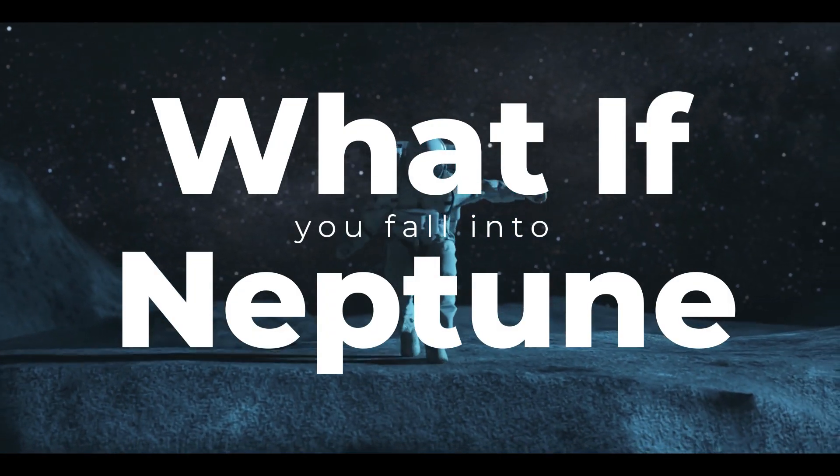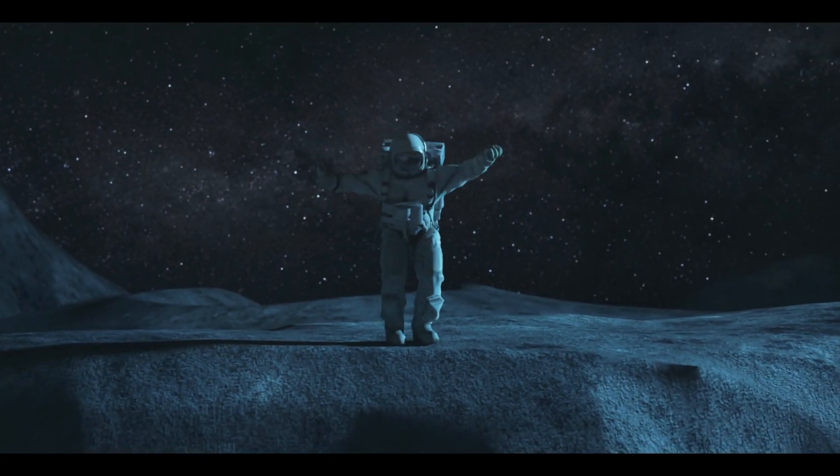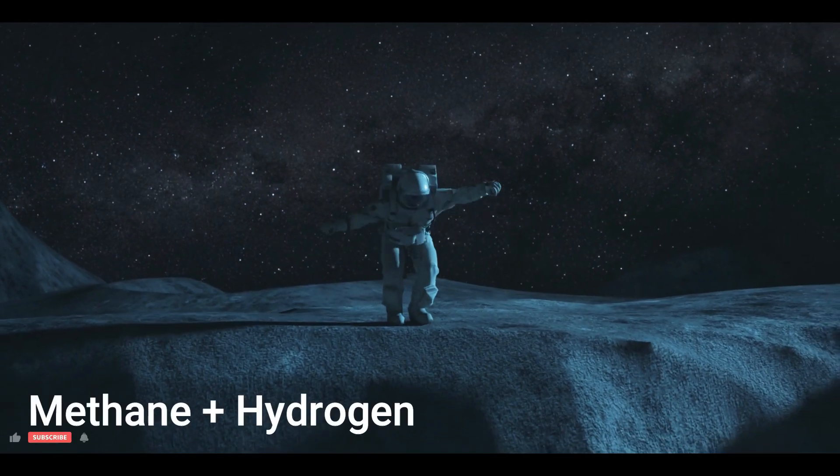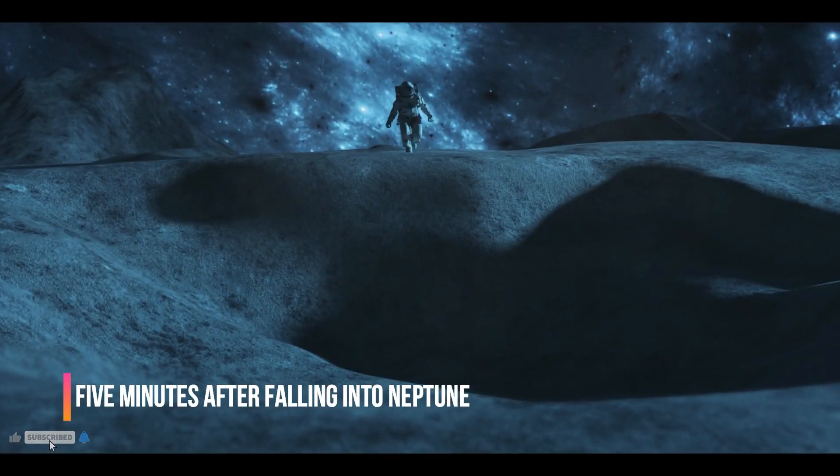Imagine what happens when you fall into Neptune. You initially encounter white cirrus clouds, comprised of methane and hydrogen, 5 minutes after descending onto Neptune.